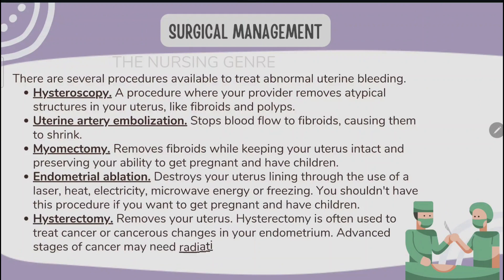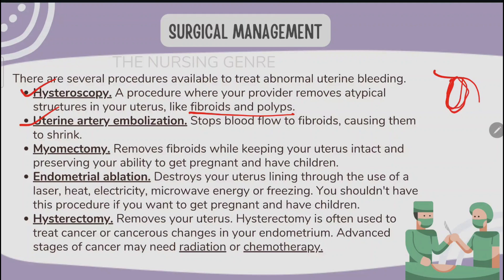Surgical management options include hysteroscopy, a procedure where your provider removes abnormal structures in your uterus like fibroids and polyps under direct visualization. Uterine artery embolization stops blood flow to fibroids, causing them to shrink. This procedure embolizes the uterine artery, reducing blood supply to fibroids and polyps.